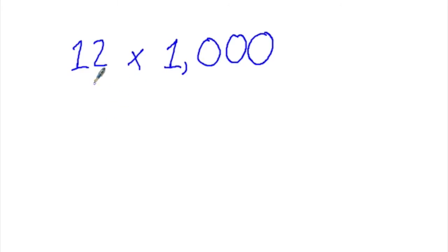This strategy even works when you have a number that has two digits and you're multiplying it by a number that ends in zeros. 12 times 1,000. First, multiply by the leading digit. 12 times 1 is 12.